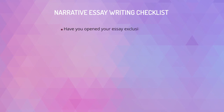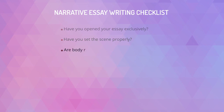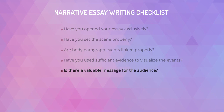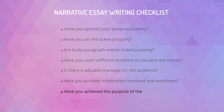Here is a narrative essay writing checklist. Have you opened your essay with a paradoxical fact, relevant quotation, definition, question or a colorful detail? Have you set the scene properly, explaining where events take place, who the main characters are, and whether they are fictional or real? Are the events in body paragraphs linked properly? Have you used sufficient evidence and sensory details with well-selected original words? Does your story contain a valuable message — does it motivate, encourage empathy, or transform the mind of the readers? Have you avoided information overload and wordiness? Have you achieved the purpose of the writing?